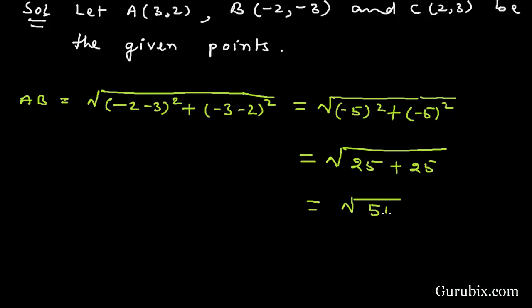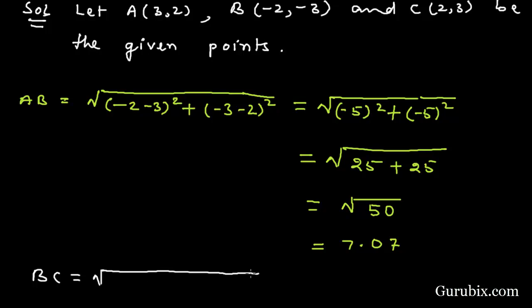This means AB = square root of 50, which is approximately 7.07. Now we shall find the distance BC using the distance formula.